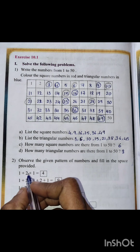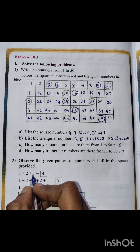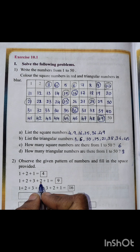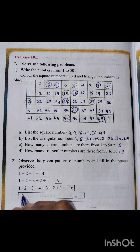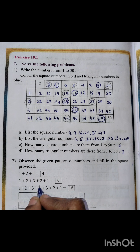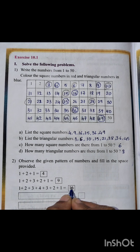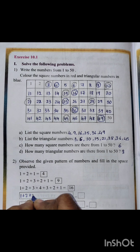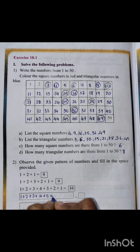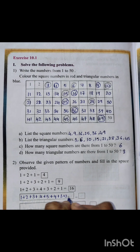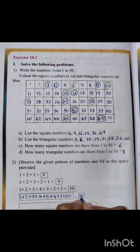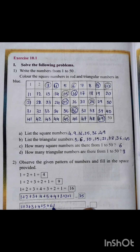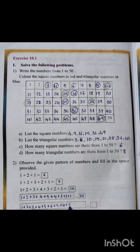Second problem: observe the given pattern of numbers and fill in the space provided. One plus two plus one is four. Next, one plus two plus three plus two plus one is nine. Same way, one plus two plus three plus four plus three plus two plus one is sixteen. Next, one plus two plus three plus four plus five plus four plus three plus two plus one is twenty-five. Then one plus two plus three plus four plus five plus six plus five plus four plus three plus two plus one is thirty-six.